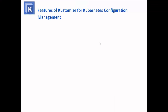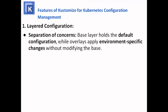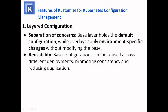The features of Kustomize for Kubernetes configuration management include layered configuration and separation of concerns. The base layer holds the default configuration — the configuration.yml — while overlays apply environment-specific changes without modifying the base. We don't need to edit the base configuration; we just add an extra YAML file for the customized requirements of our environment.